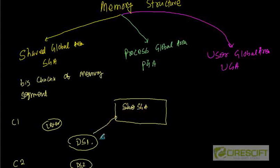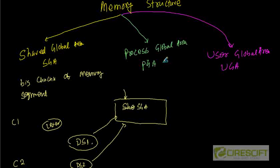The database background processes like PMON and SMON also access the SGA at certain points of time to do certain things. So this is the concept of the Shared Global Area. The next one is called Process Global Area.